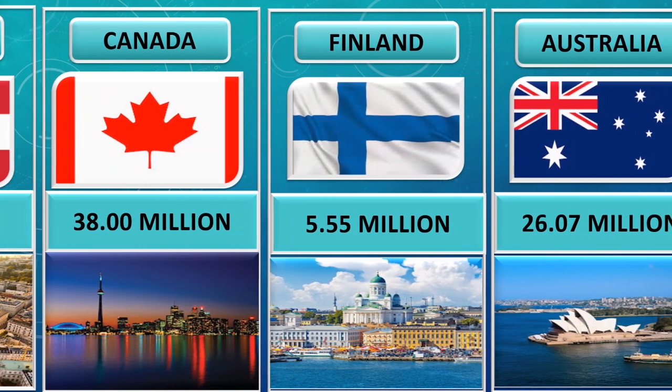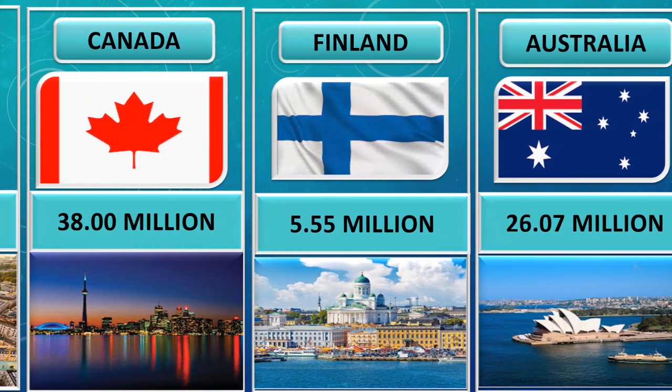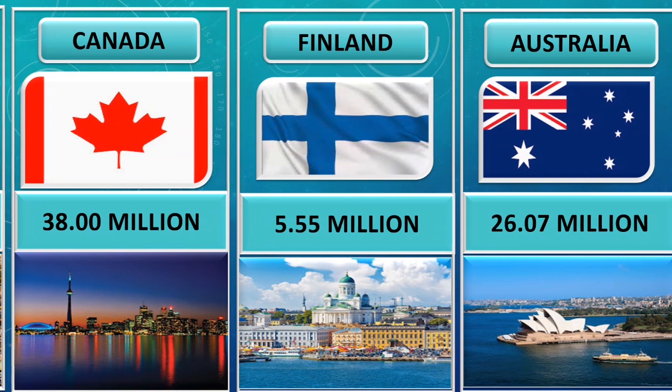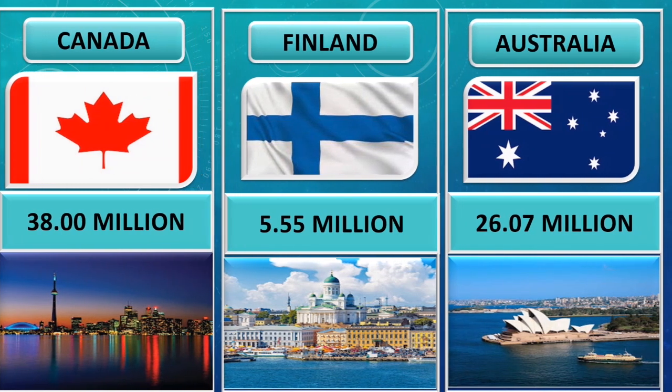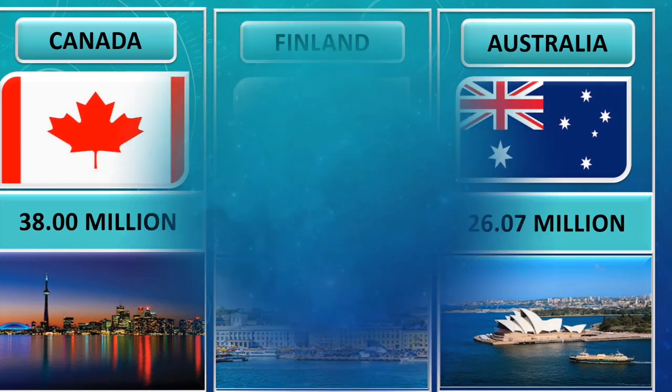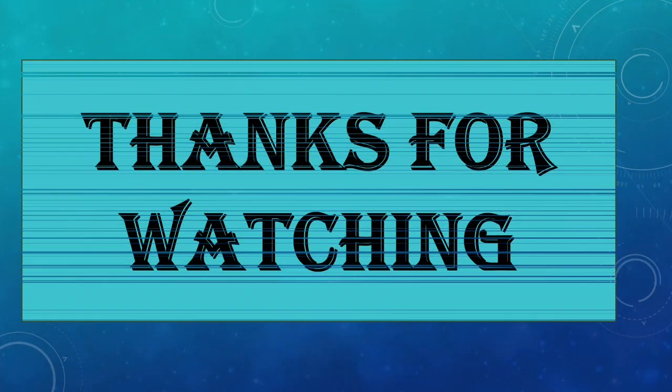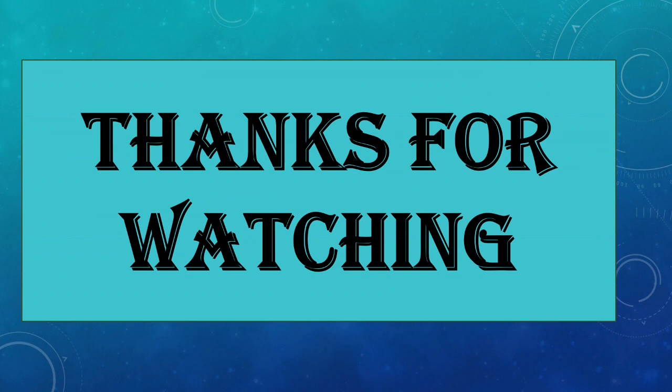These are the top ranking population countries of the world. Population of Australia is 26.7 million. Thanks for watching our video.